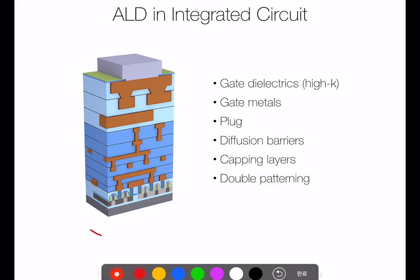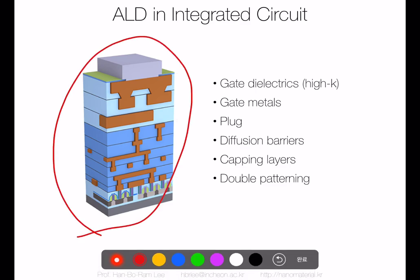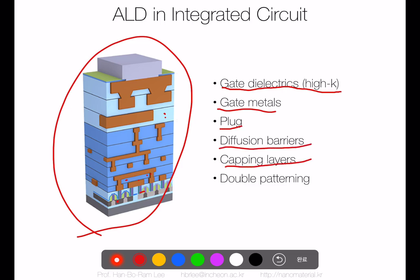This is the cross-section of an electronic integrated circuit system — transistor, interconnect, and interlayer dielectric. We can use ALD for many things: first of all, high-k material as gate dielectric, gate metal deposition, plug and diffusion barrier, capping layer, and double patterning.